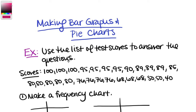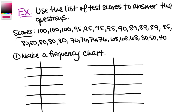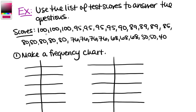In our first example we have a list of test scores and we want to use that to make a frequency chart. We need to note that our list of data is sorted from highest to lowest, and we do list out all the repeats. If it were jumbled, you'd first sort your data from highest to lowest or lowest to highest.